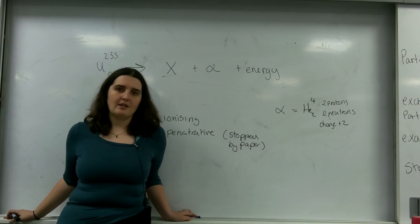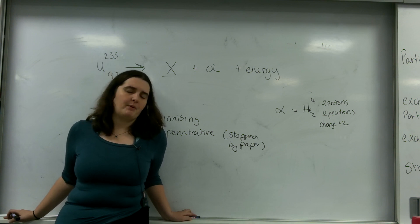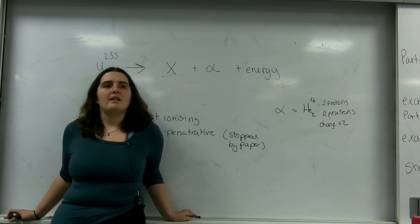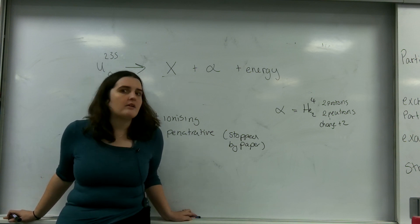when an alpha particle hits an electron, it's like being hit by a two-ton truck. So it's very easy to ionise things.